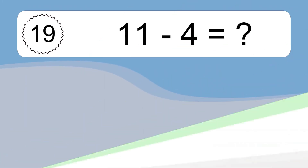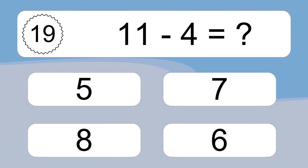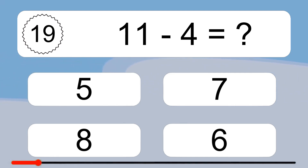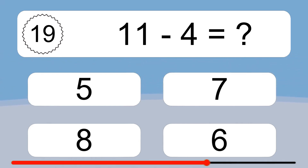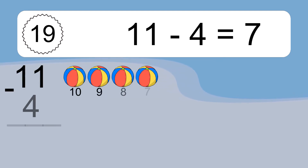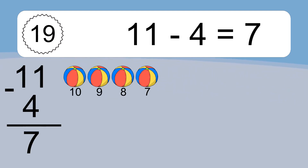Eleven minus four equals what? Eleven minus four equals seven. Let's count it: 10, 9, 8, 7.